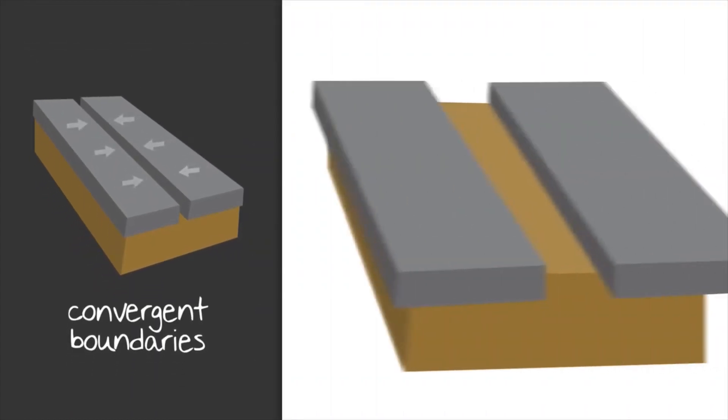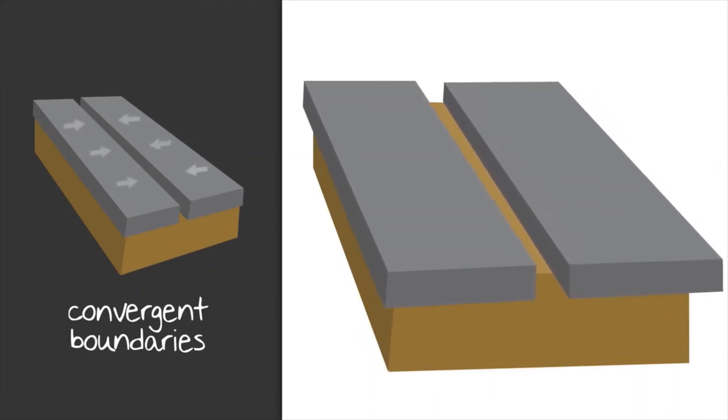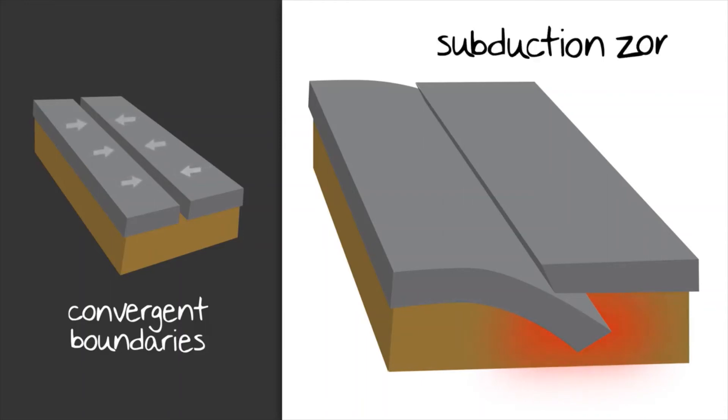As we said, convergent boundaries are when plates are moving towards one another. When the two plates collide, a couple of things can happen. One of the plates will dive under the other plate. It's usually the heavier, denser crust that dives under the lighter crust. This creates what is called a subduction zone.